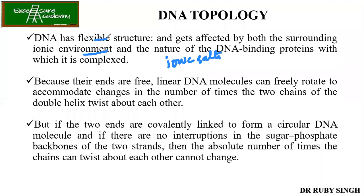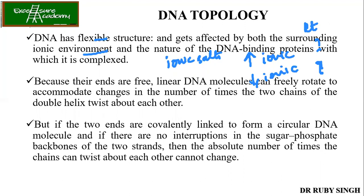If you have a high concentration of ionic salts, you get a right-handed, double-stranded DNA. If the ionic concentration is low, then you get left-handed DNA. Please remember this important point.